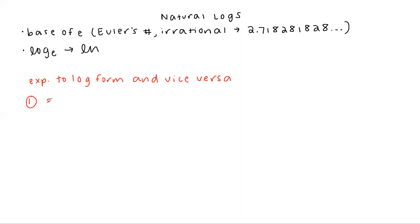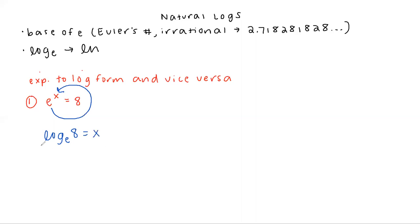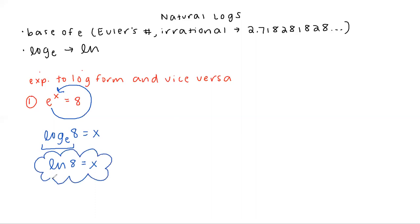Let's say we start with E to the X equals 8 — that would be exponential form — and we're going to put it into log form. You can still use the little loop trick to know what order to write it in. So this would be log base E of 8 equals X. Because we wrote log base E, we change just that part to LN to make it shorter. So your answer would be LN of 8 equals X — taking it from exponential form into natural log form.